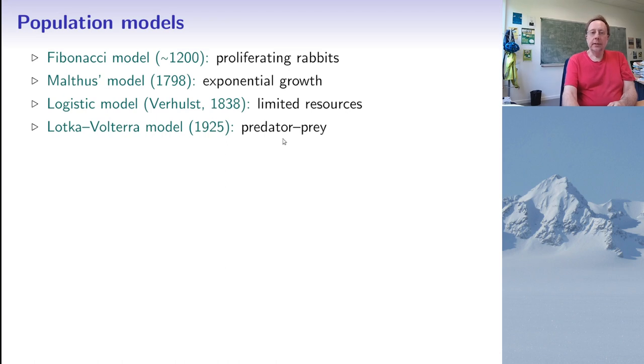And another example of model for population evolution which is quite well known is the so-called Lotka-Volterra model and that is a model describing the evolution of the system of predators and prey such as for example lynx and hare in Canada. And what is interesting about this model is that it is able to reproduce cyclic evolution of populations in time which has been observed.